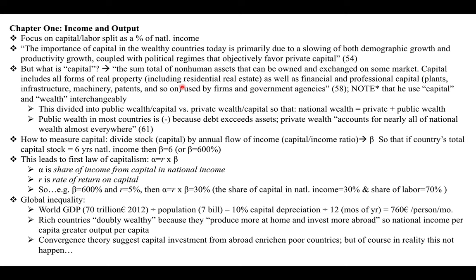Moving on to chapter one, income and output — here he focuses on the capital-labor split as a percent of national income. He says the importance of capital in wealthy countries today is primarily due to a slowing of both demographic growth and productivity growth, coupled with political regimes that objectively favor private capital. This sounds pretty straightforward, and I can already think of a number of countries around the world where this pretty much exactly applies.